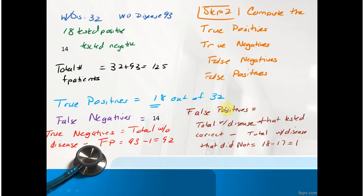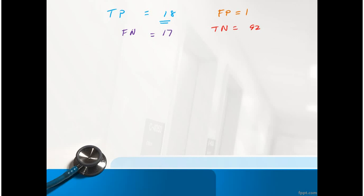Here again, just to remind you, this person did not have the disease but we told them that they did. So this is the person that didn't have cancer that we told them they did have cancer. So that's a summary: true positives, false negatives (this should be 14), false positives was 1, true negatives was 92.